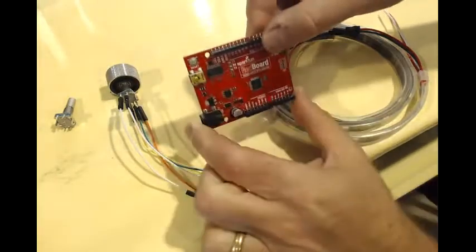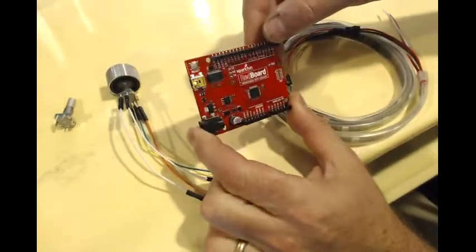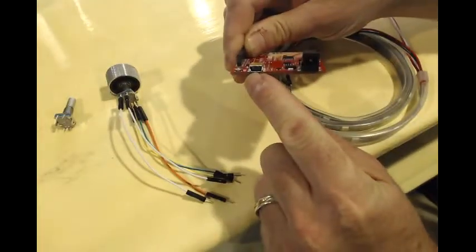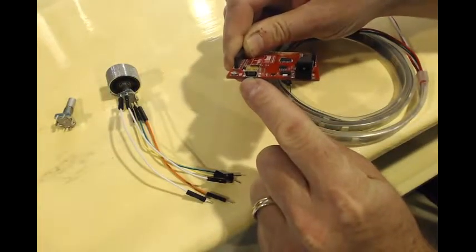This is the SparkFun Red Board. This is the brains of our project. It's a flat board with a USB connection on one side that lets the computer upload programs.